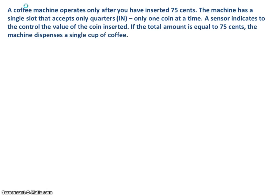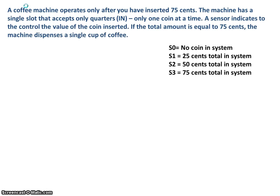Let's start by describing the different states we might need. We'll call our states S0, S1, S2, and S3. S0 is when no coin is in the system. S1, S2, and S3 represent 25, 50, and 75 cents total in the system at any given time.